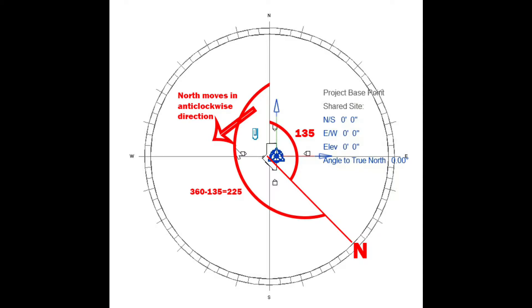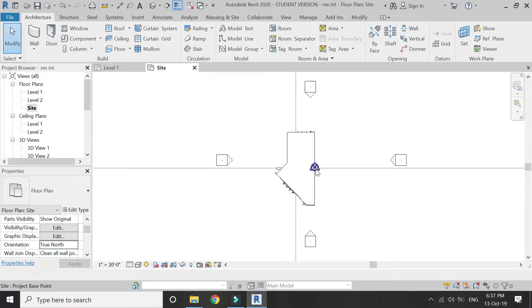You can see in this diagram that the north angle moves in the anti-clockwise direction. So the actual north is at 135 degrees to the true north, but if I want to place that north at 135 degrees I have to give it the angle of 225 degrees, as it moves in the anti-clockwise direction. If I give it the angle of 135 degrees it will not be rotated correctly.